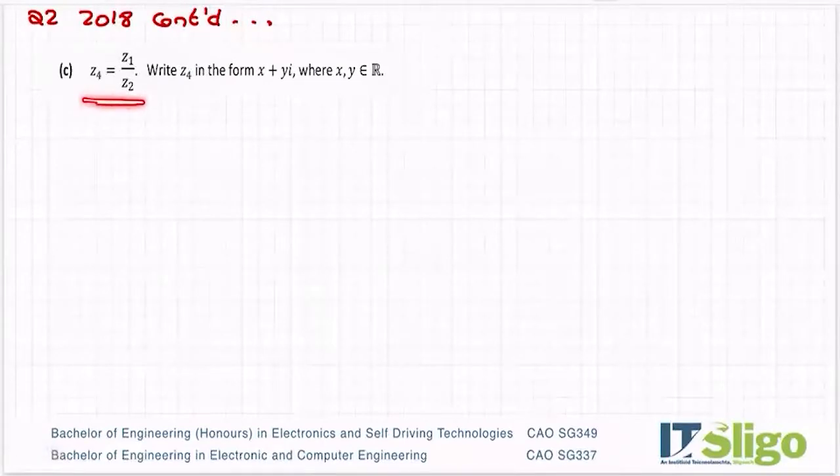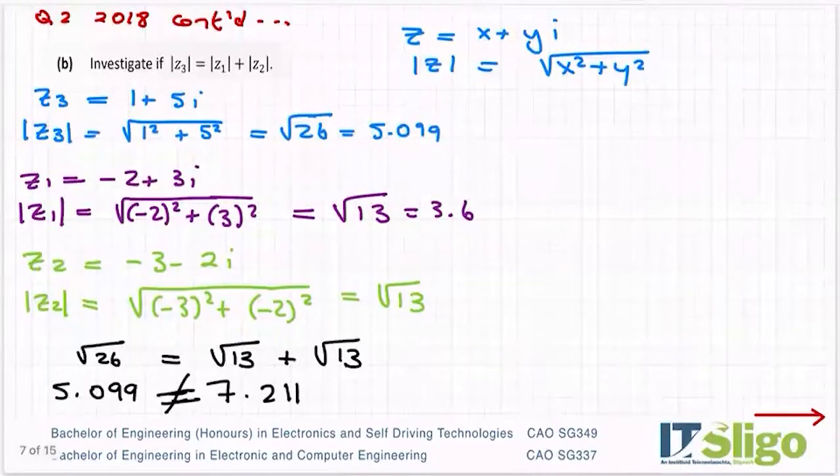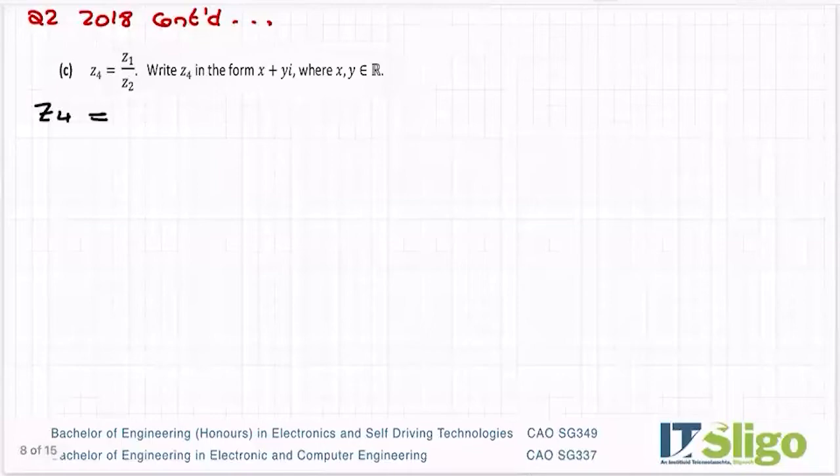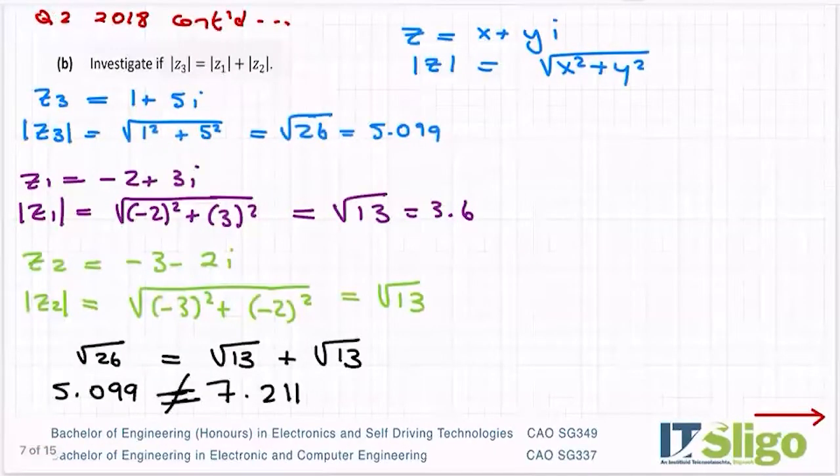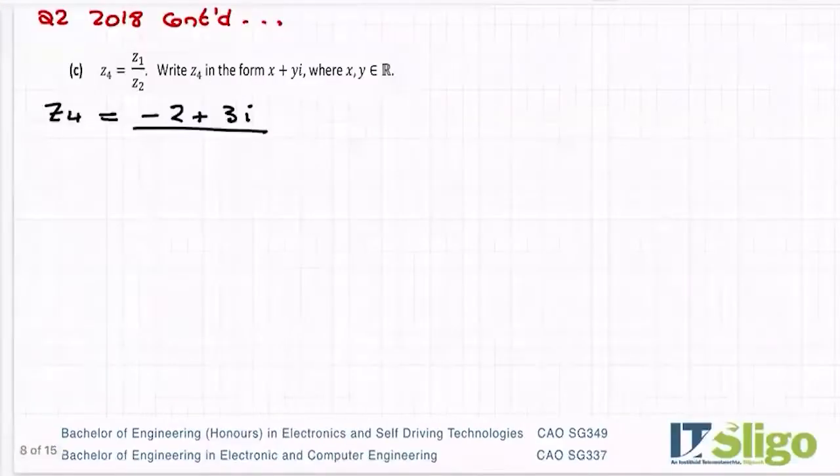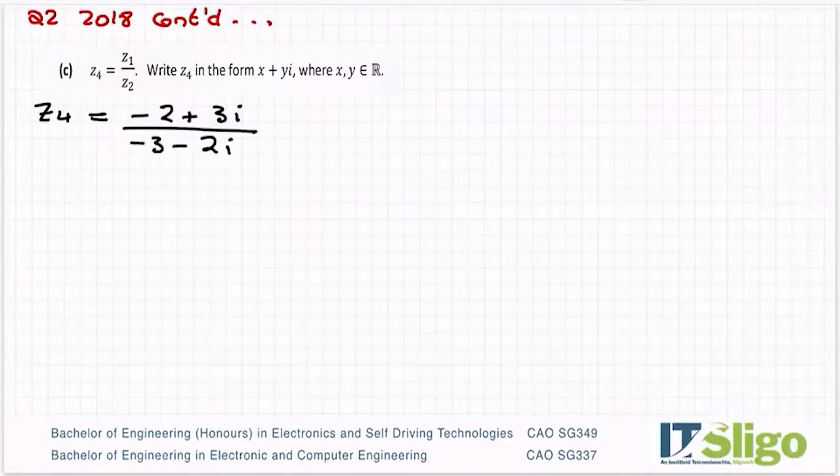Now, z4 is equal to z1 over z2. Write z4 in the form x plus yi, where there are real numbers. OK. So this is examining, can you divide complex numbers? So z4 is equal to z1. Take my z1 from here. Minus 2 plus 3i over z2 minus 3 minus 2i. OK. One of the rules of maths is you're not allowed to divide by zero. OK. And you'll get a maths error if you do that. Another rule of maths, you're not allowed to get the square root of a negative number. You'll get a maths error. Another rule of maths is you're not allowed to divide by imaginary numbers. You can only divide by real numbers.